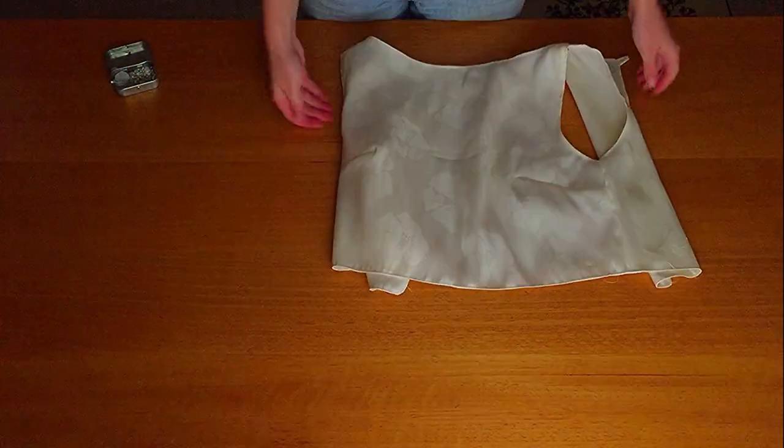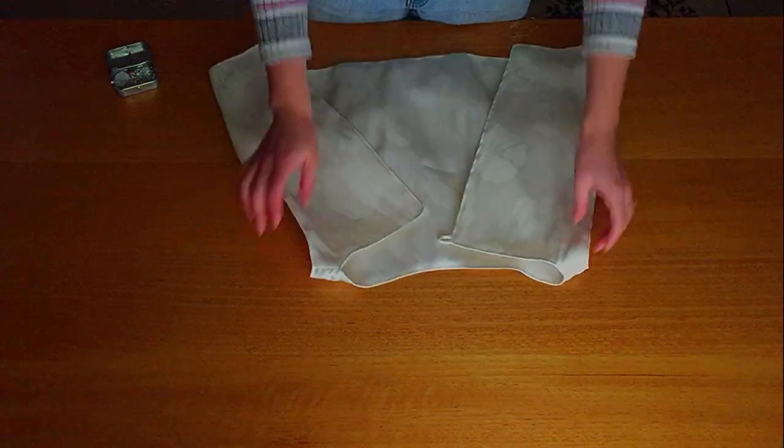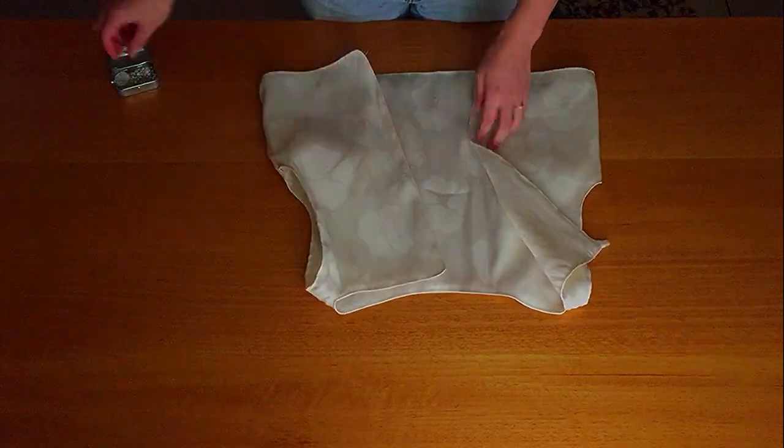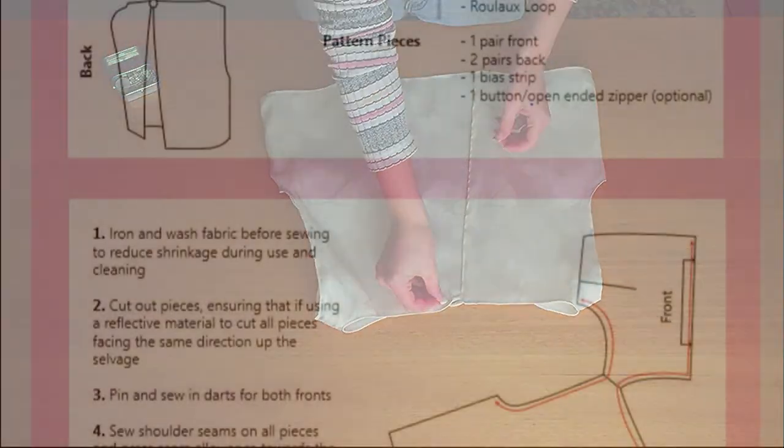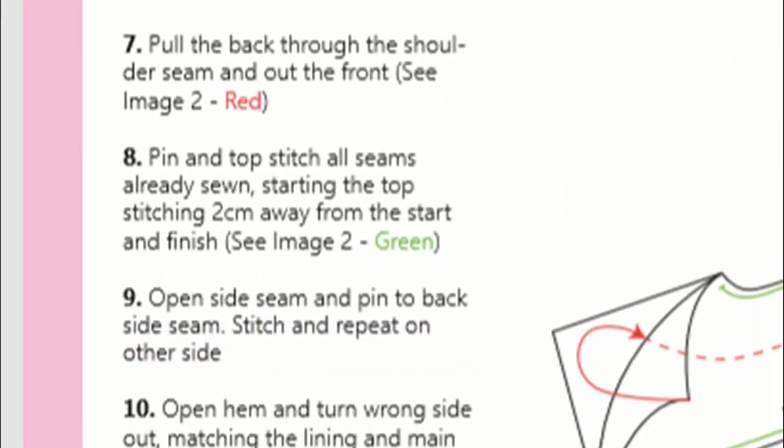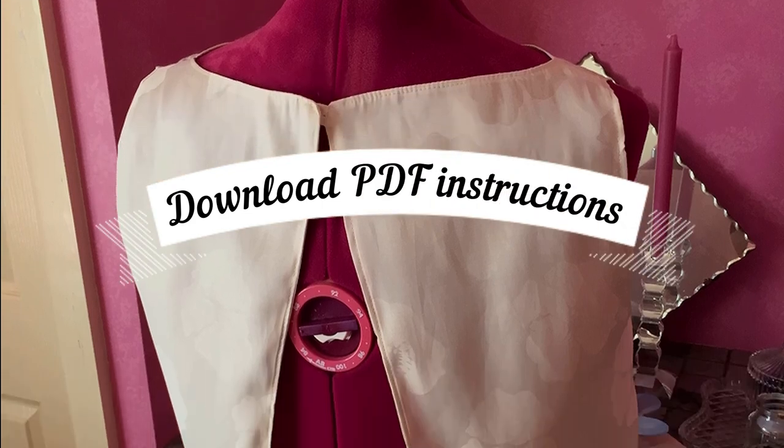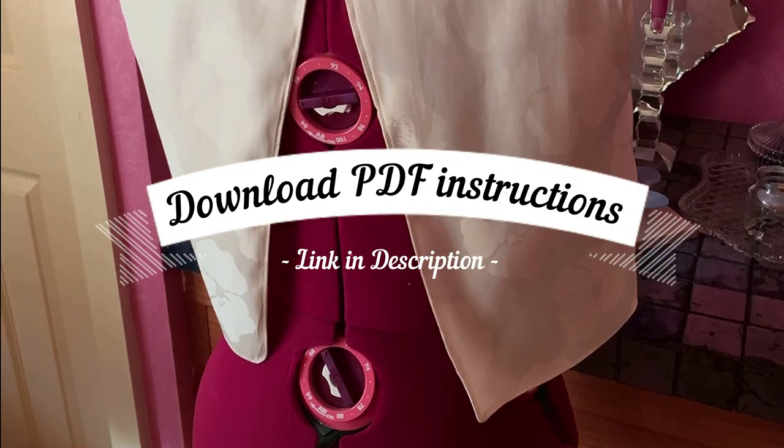Then clip any loose threads and stitch on your button. Don't forget to visit my blog to download the free PDF notes, which you can follow or keep for reference. They also come with clear images to match the steps. You can find the link below. Please like and subscribe if you enjoyed the video. Comment below for any other tutorials you may want. Thanks for watching.